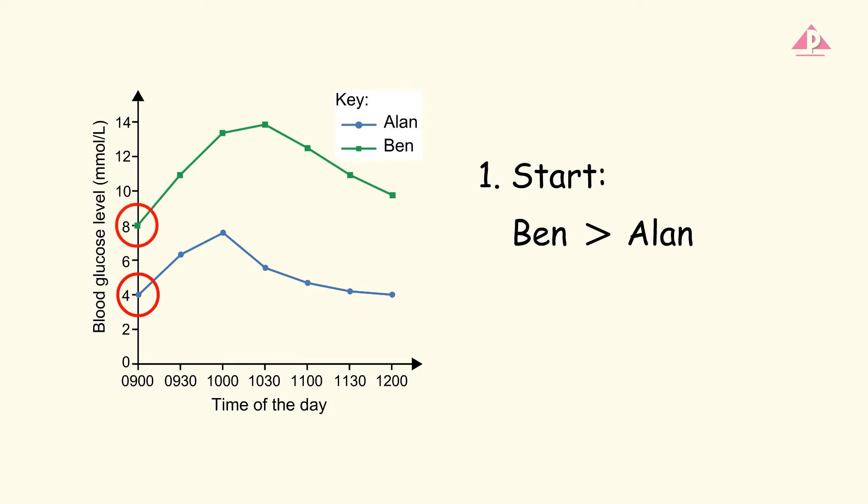This graph shows that Ben's blood glucose level was already higher than Alan's at the start. Note the use of the comparative adjective 'higher' to clearly show the comparison.